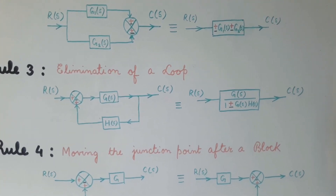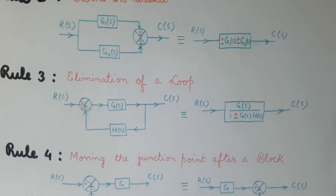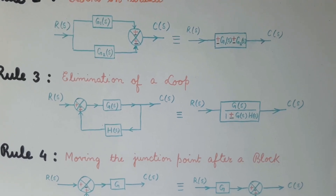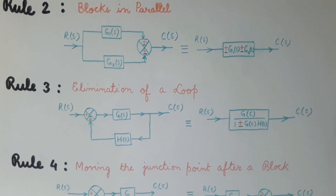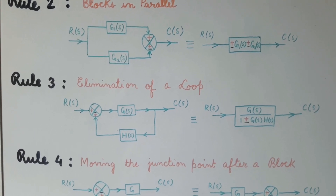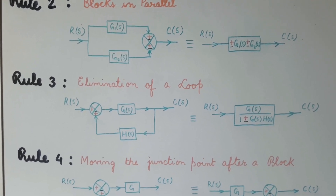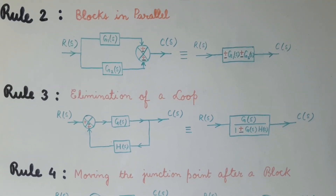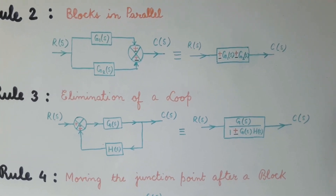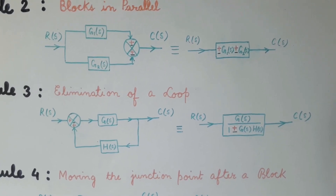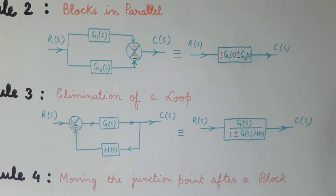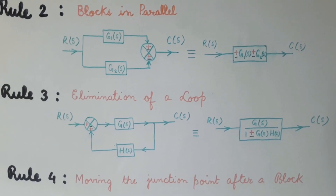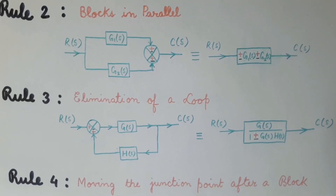Rule number 3 says that if there is a loop, we can eliminate it using block diagram reduction. Here we find that G(s) and H(s) are making a closed loop. In that case we can replace the loop by a single block between R(s) and C(s), and the value of that block will be equal to G(s) divided by 1 ± G(s)·H(s).